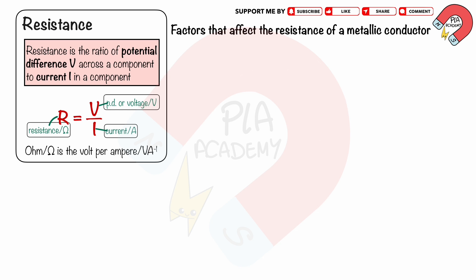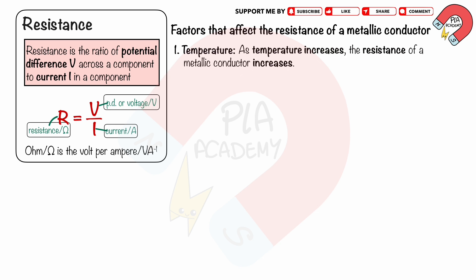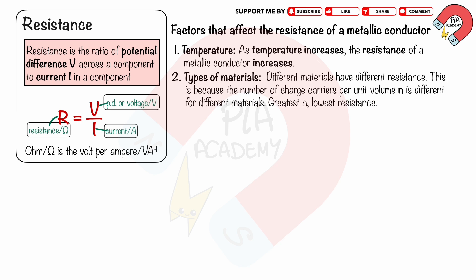Four factors affect the resistance of a metallic conductor wire. Factor 1: Temperature. As temperature increases, the resistance of a metallic conductor increases. This is because the atoms in a conductor gain kinetic energy and vibrate more, which reduces the rate of flow of charges, causing the current to decrease and resistance to increase. Factor 2: Type of material. Different materials have different resistance because the number of charge carriers per unit volume N is different for different materials. Greatest N means lowest resistance.